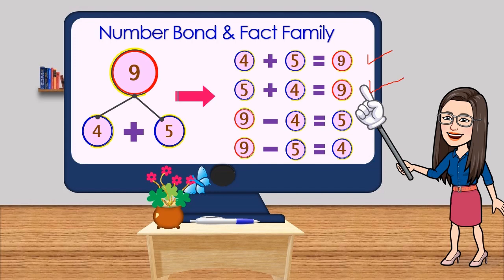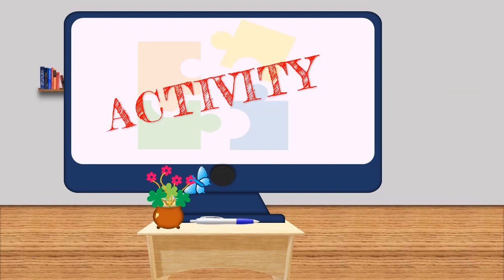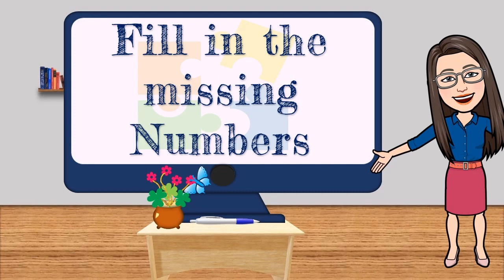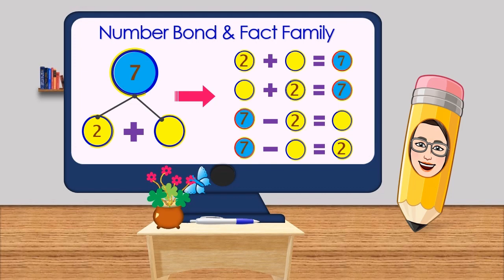9 minus 4 is equal to 5, then 9 minus 5 is equal to 4. I guess you already have enough knowledge. Now let's go to our activity. Fill in the missing numbers. The numbers that bond to 7 are 2 and...